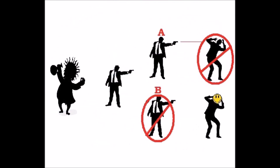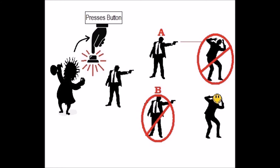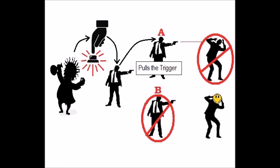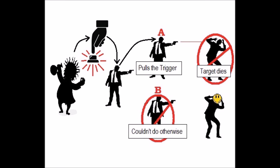Now let's add the evil neuroscientist. In this modified case, the evil neuroscientist can push a button. When he does, he activates implants in the brain of the gunman, which causes the gunman to pull the trigger, preventing him from doing otherwise, and resulting in the death of the target. According to the normative model, the evil neuroscientist is responsible for the gunman pulling the trigger, because the evil neuroscientist caused the gunman to do it and prevented him from doing otherwise.